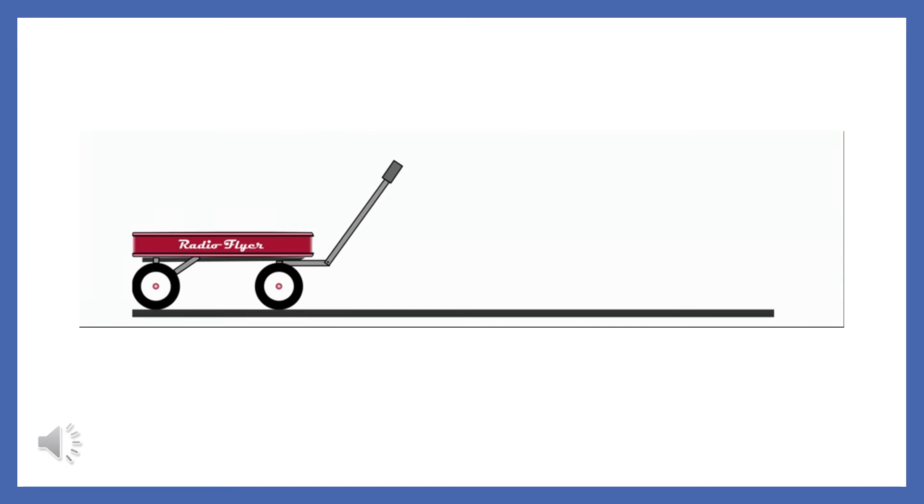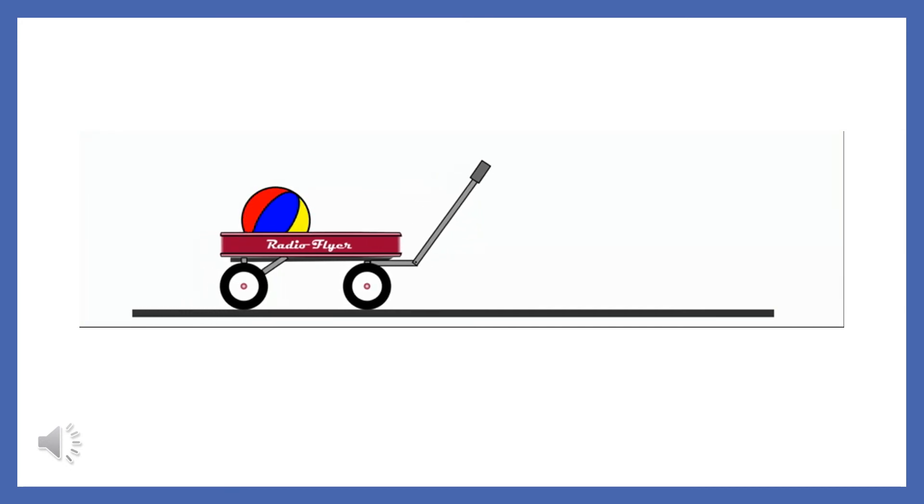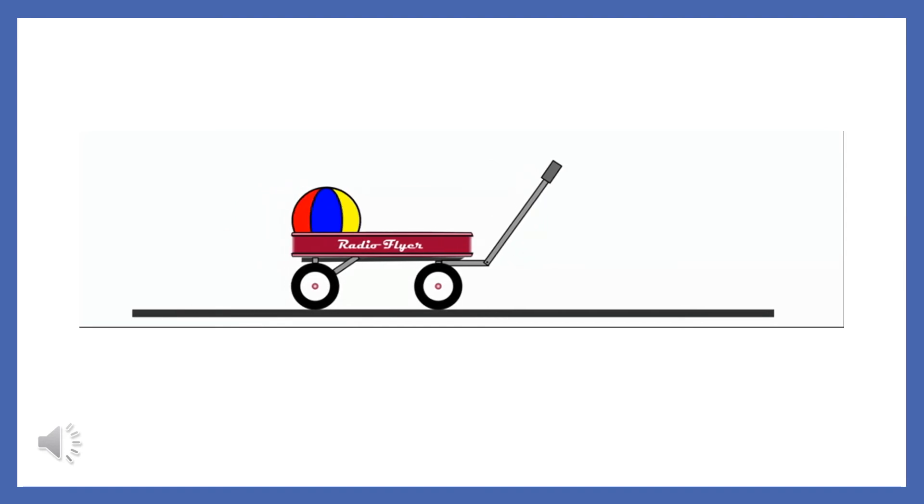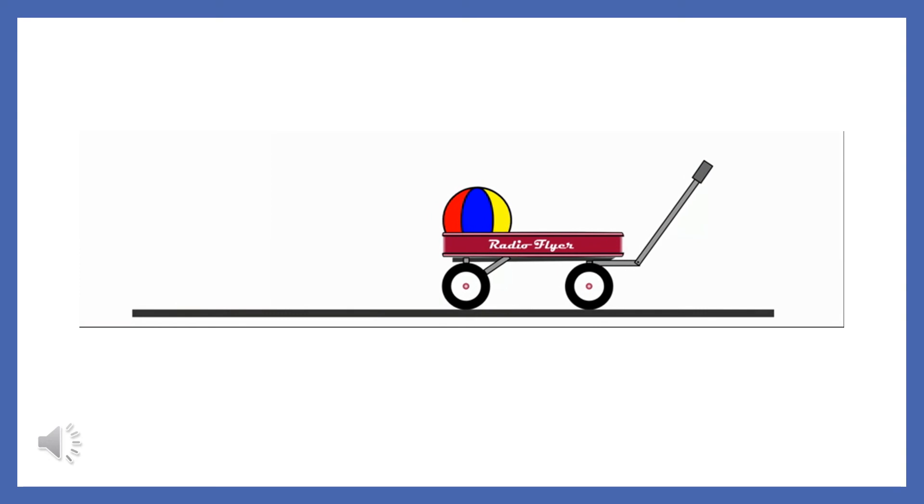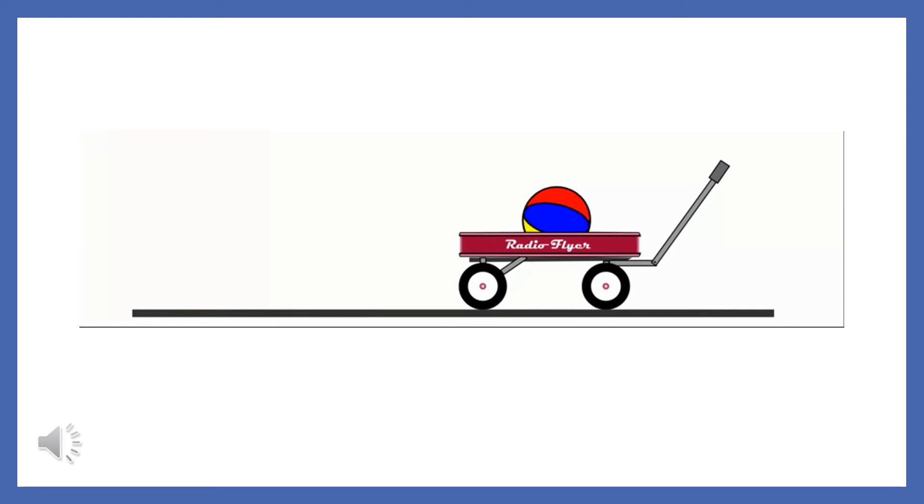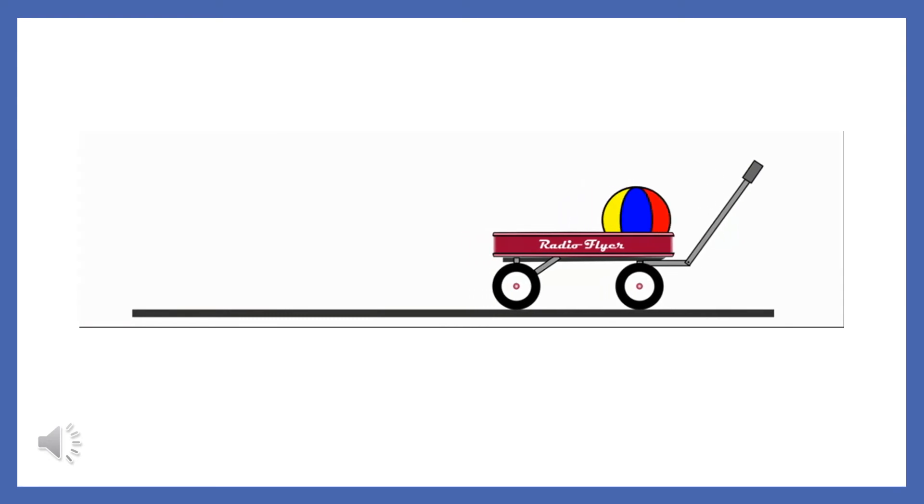Let's look at the example you saw in the beginning of this presentation in terms of what you've just learned. When the wagon starts moving, the ball is at rest, so it remains at rest. When the wagon stops moving, the ball has no net force on it, so it continues to move with constant velocity.